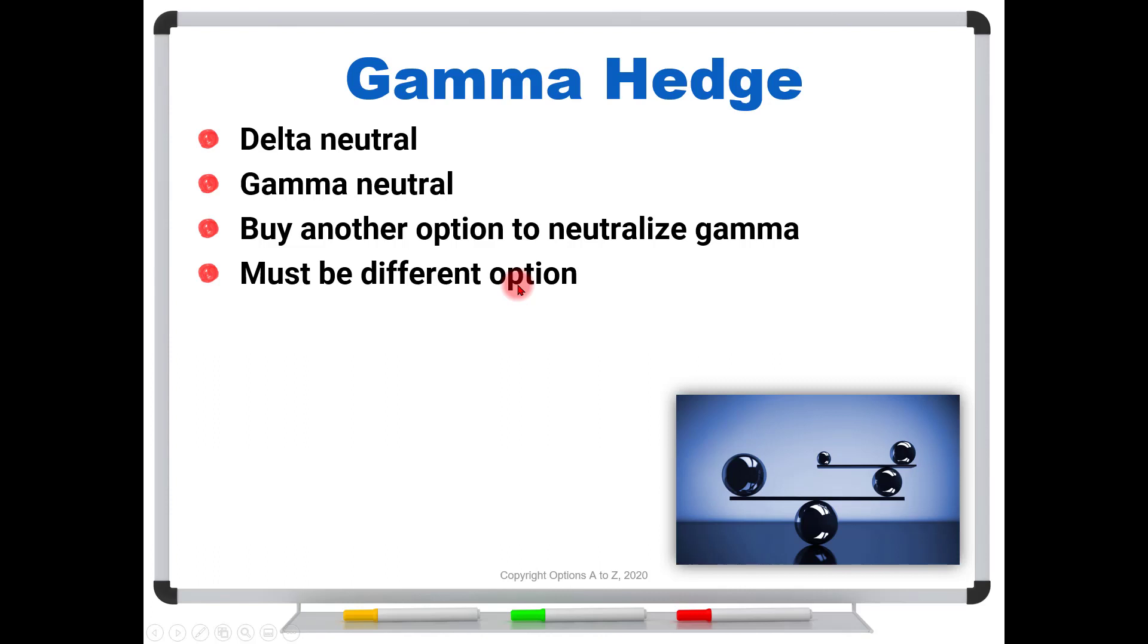Now, part of the plan is that it also has to be a different option. It could be a different strike, different expiration. But for this example, I'm going to assume that we are buying a 30 day $100 call. Recall that we shorted a 90 day $100 call. So I'm going to keep the strikes the same, but I'm just going to reduce the time to expiration.